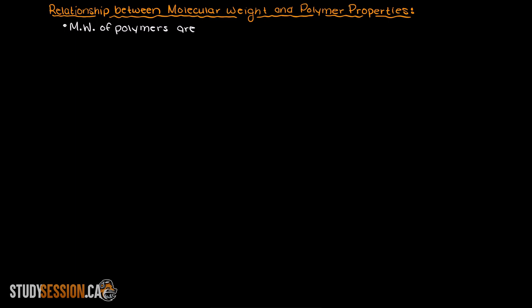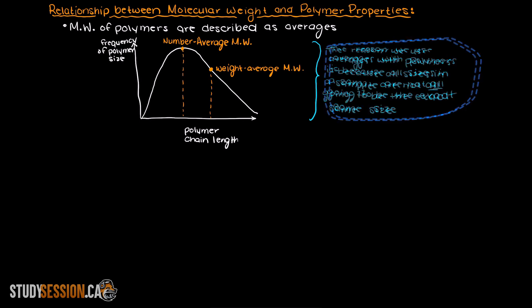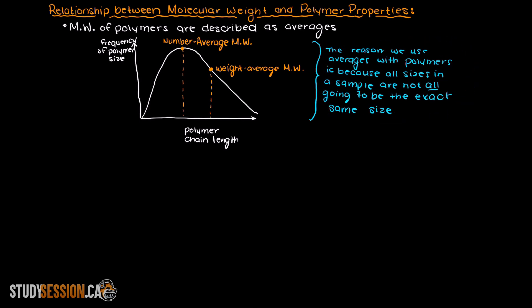Just quickly remember that the molecular weight of polymers are generally described as averages such as the number average molecular weight and the weight average molecular weight. The reason we use averages with polymers is because all polymer molecules in a sample are not going to be the exact same size. If you want to learn more about this, I will post a video in the description below to help your understanding on how we can understand the molecular weight of a polymer sample.